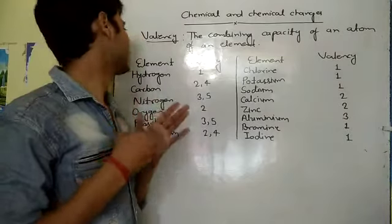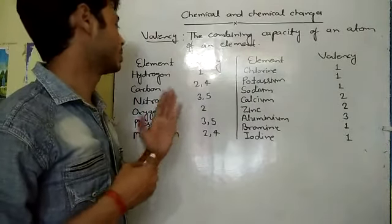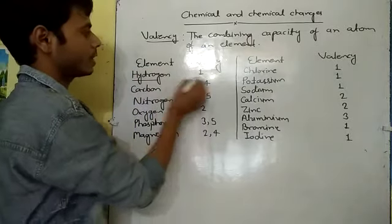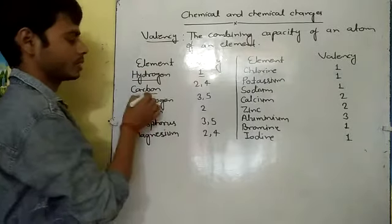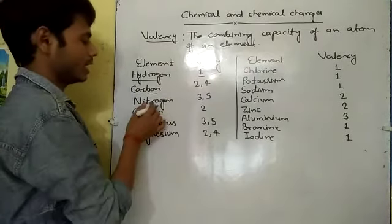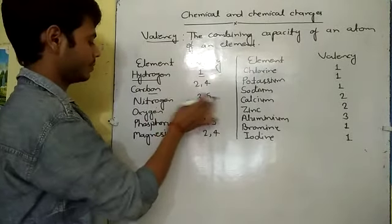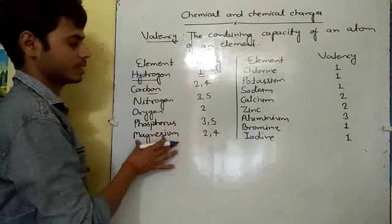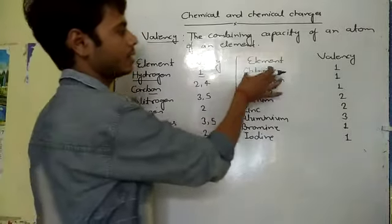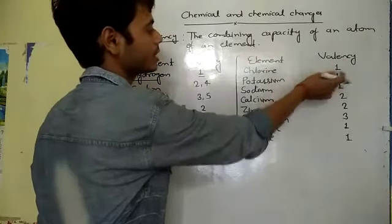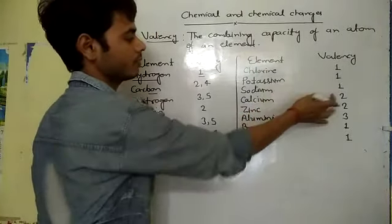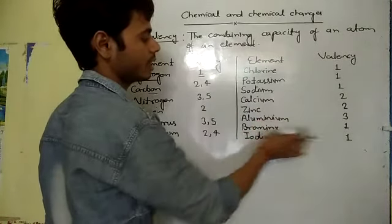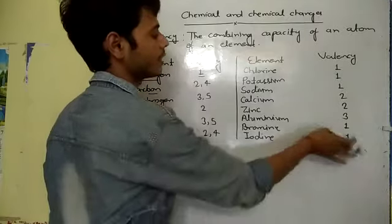We have already written here some elements and their valencies. Hydrogen shows valency one. Carbon shows valency two and four. Nitrogen shows three and five. Oxygen two. Phosphorus three and five. Magnesium shows valency two and four. Chlorine shows valency one. Potassium valency one. Sodium one. Calcium two. Zinc two. Aluminium three. Bromine one. And iodine shows valency one.